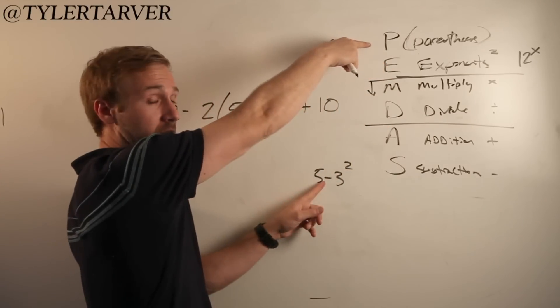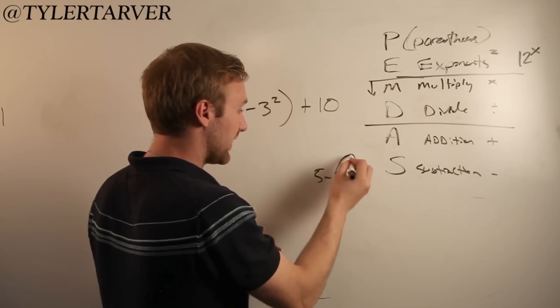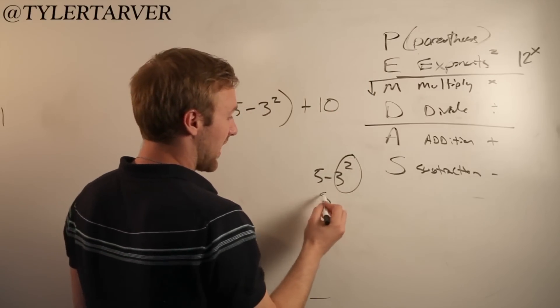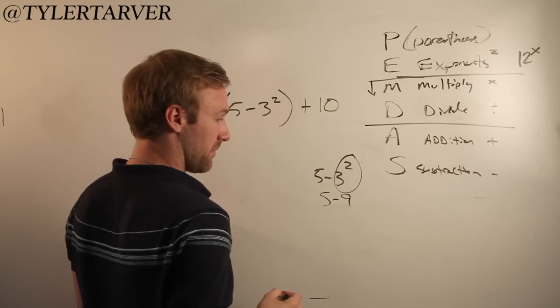Are there any more parentheses in here? No. Do we have any exponents? Yes. We've got this. So we need to do that. So 5 minus 3 squared, which would be 9.